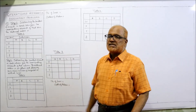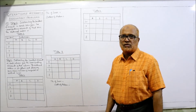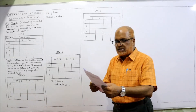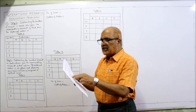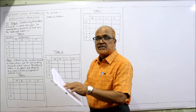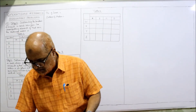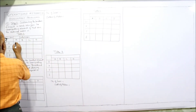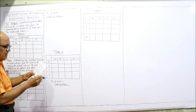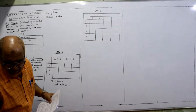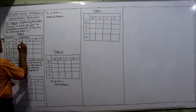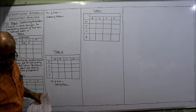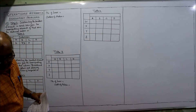First step is subtracting the rows — subtracting the smallest element in each row from the corresponding elements of that row. First row: 41, 72, 39, 52. The minimum is 39. So 41 minus 39 is 2, 72 minus 39 is 33, 39 minus 39 is 0, 52 minus 39 is 13.